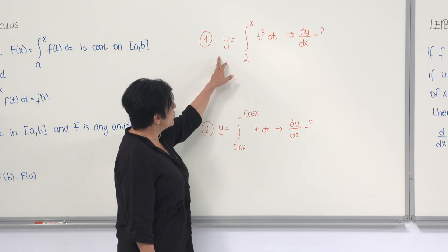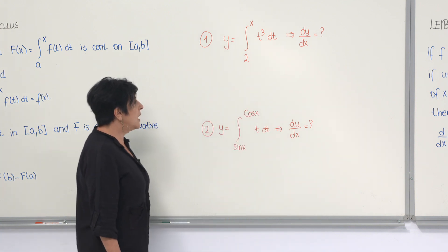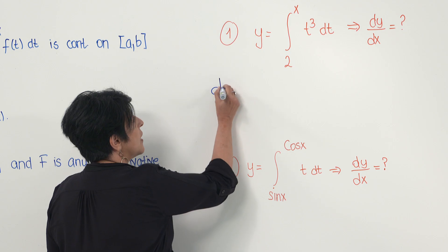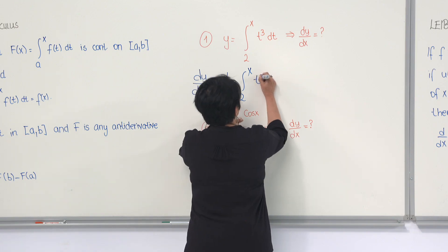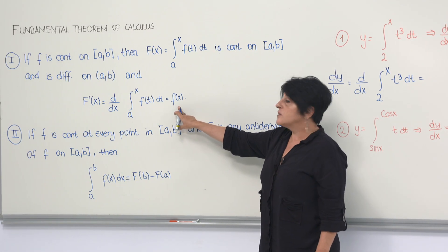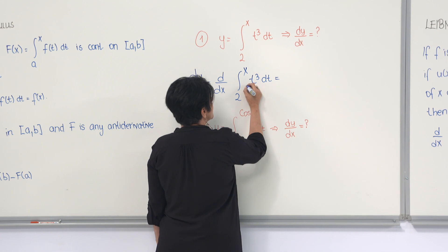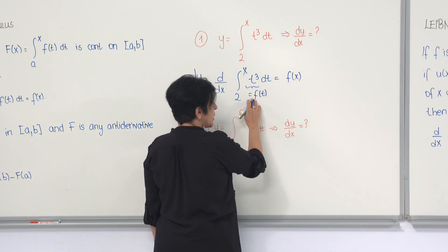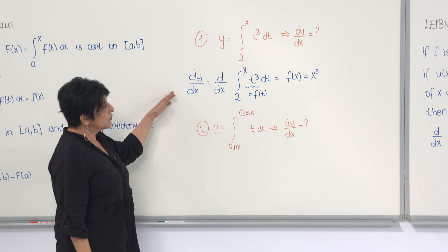The first example: y equals the integral from 2 to x of t³ dt, and they ask you to calculate dy/dx. This is integrable, but instead I'll use the fundamental theorem of calculus. Here, a equals 2 — a constant — and the integrand f(t) is t³. We already know this equals f(x), so if f(t) = t³, then f(x) = x³. Therefore, dy/dx equals x³.